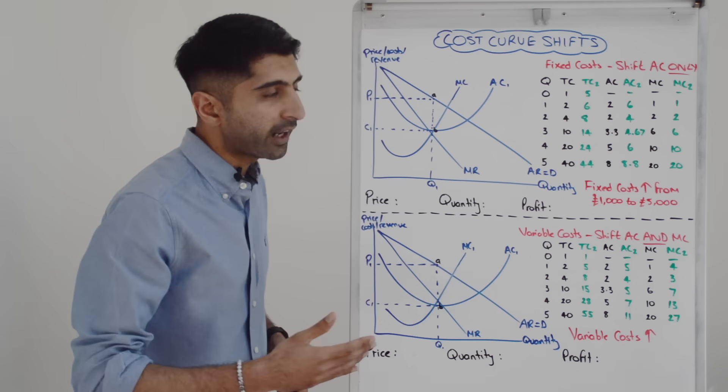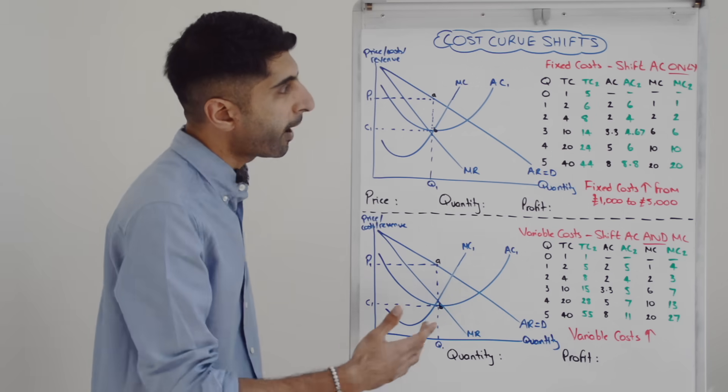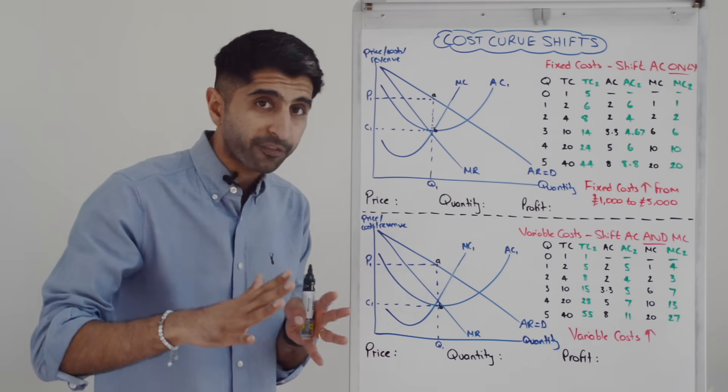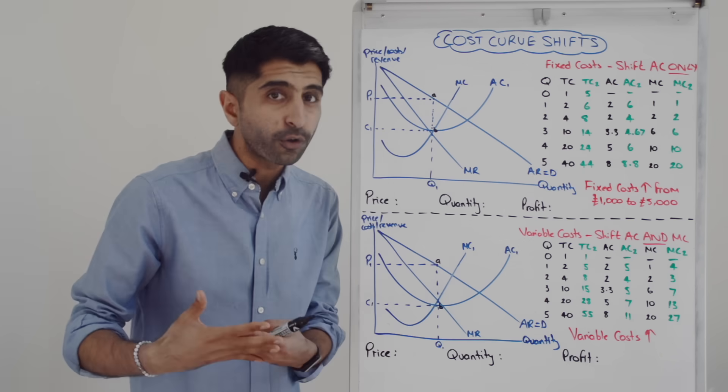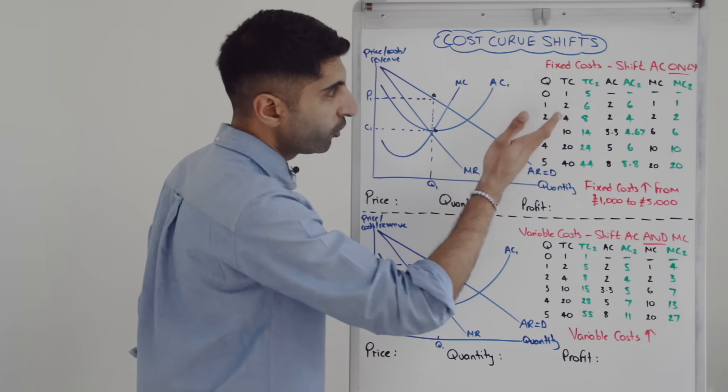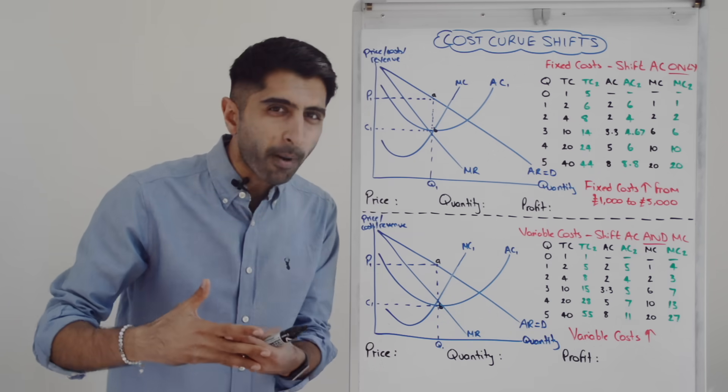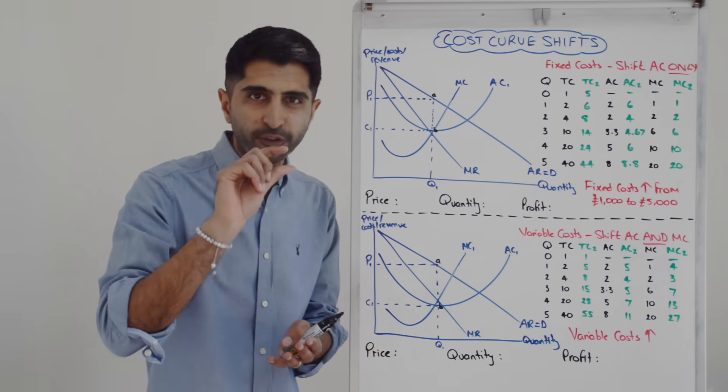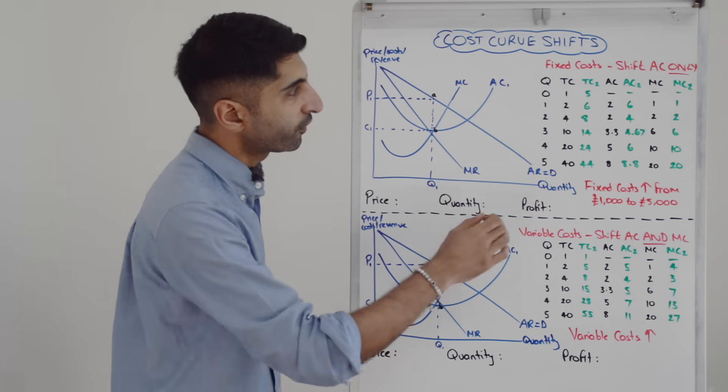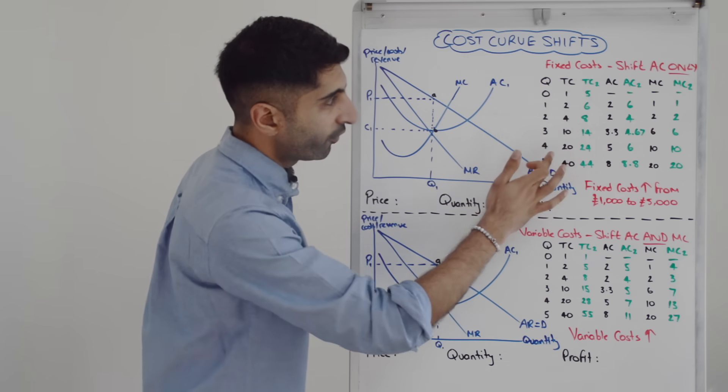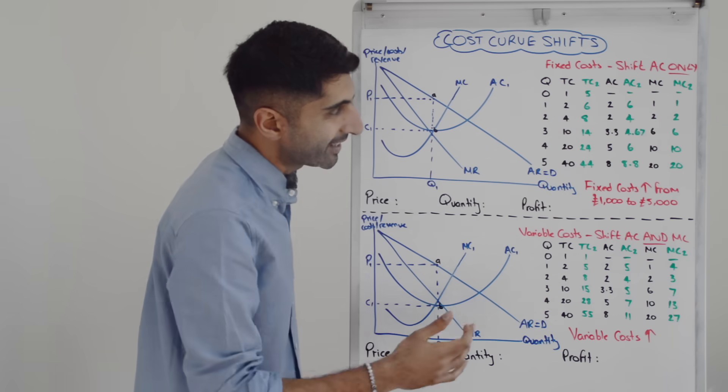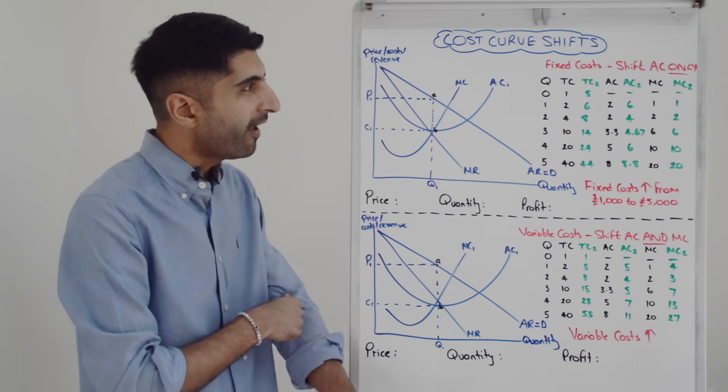So with total cost numbers that look like that, we can work out average cost and marginal cost. Average cost in black is just total cost divided by quantity. So two divided by one gets you two, 3.35 and eight. But looking at marginal cost, we're just looking at the change of total costs: one to two is one, two to four is two, four to 10 is six, 10 to 20 is 10, 20 to 40 is 20.